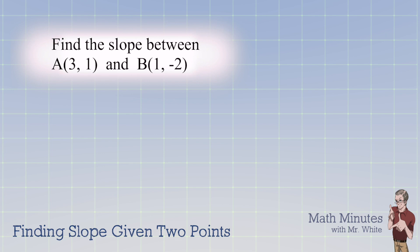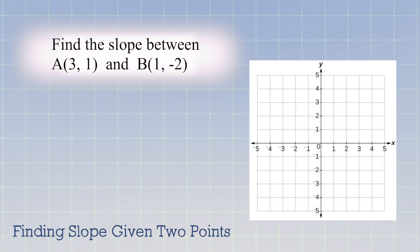Let's look at finding the slope between two points. You see two points here, A and B. A being 3,1. Now we could graph that, of course, and point B, and we could also graph that.